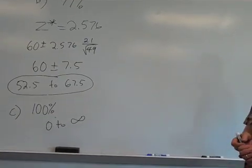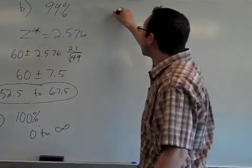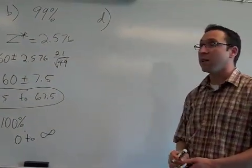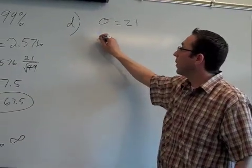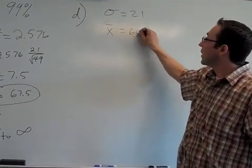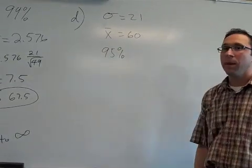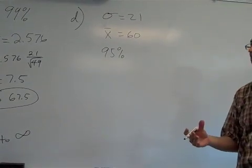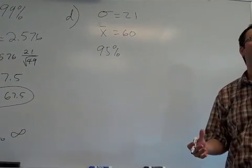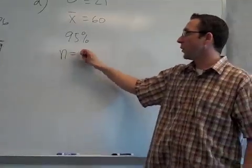And then lastly, there's question D, which talks about changing something else. In question D, it says, keeping everything else the same, the standard deviation is still 21, the sample mean is still 60, and dealing with 95% confidence. What happens if that sample average of 60 didn't come from 49 students, but came from 400 students instead? What happens if we're talking about 400 students? Will that make the confidence interval larger or smaller?